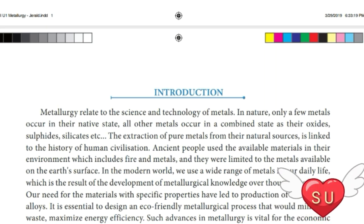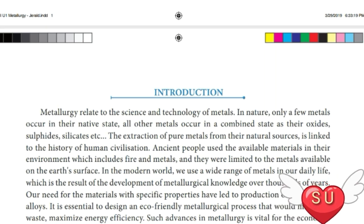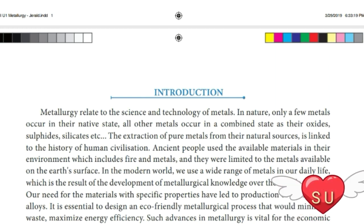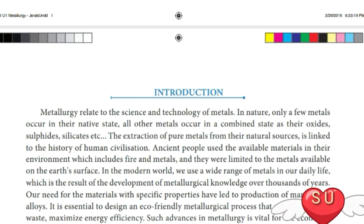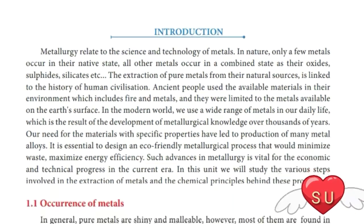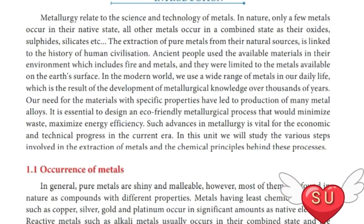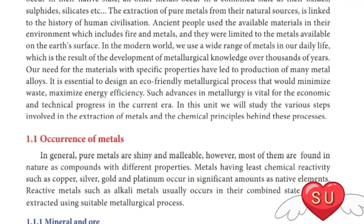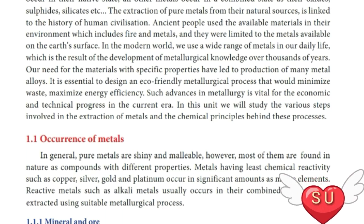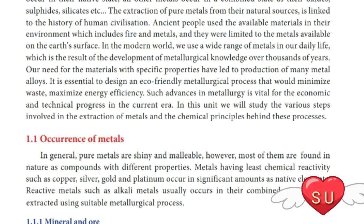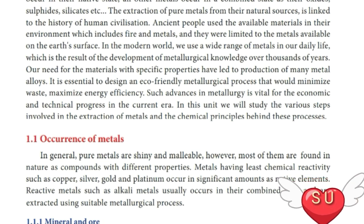In nature, only a few metals occur in the native form. All other metals will occur in the combined state as oxides, sulphides and silicates. In this chapter, we are going to see what metallurgy processes are used. Such advances in metallurgy are vital for the economic and technical progress in the current era.